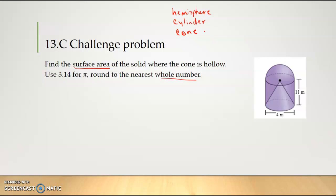We have three different shapes which means we need the formula for all three of those. Surface area of a hemisphere is going to be half the surface area of a sphere. So the surface area of a sphere is 4πr², divide that in half and we get 2πr². Our cylinder surface area is 2πr² + 2πrh, and our surface area for the cone is πr² + πr(slant height).